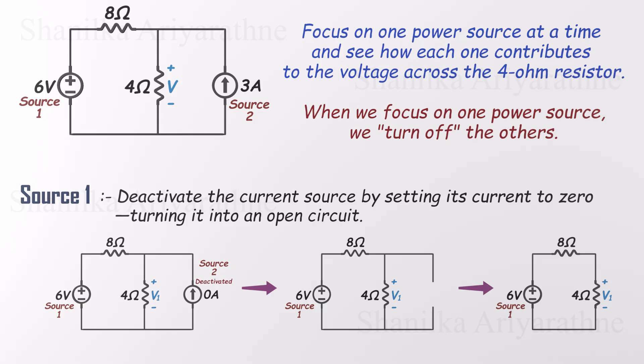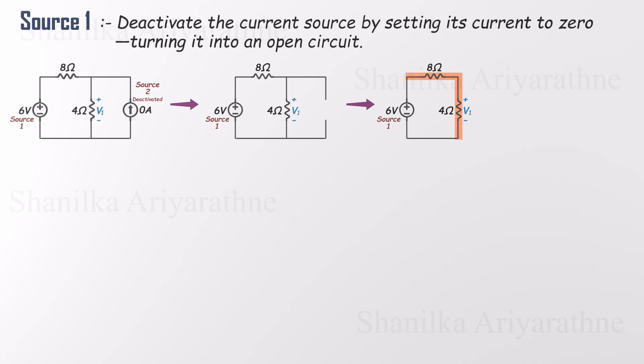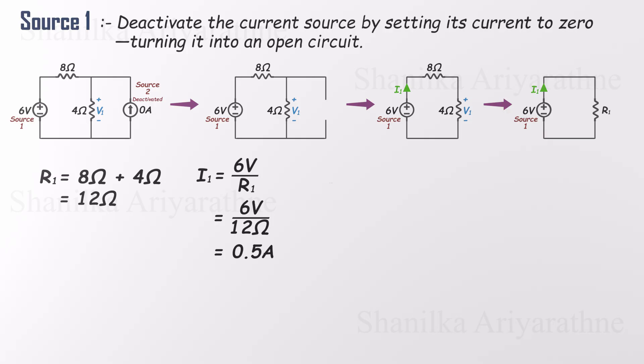We could use the voltage divider rule here, but let's go step by step. The two resistors, 8 ohms and 4 ohms, are in series. That gives us a total resistance of 12 ohms. Using Ohm's law, we find the current through the loop. Now that we know the current, we can easily find the voltage across each resistor. So the voltage source alone contributes 2 volts across the 4 ohm resistor.